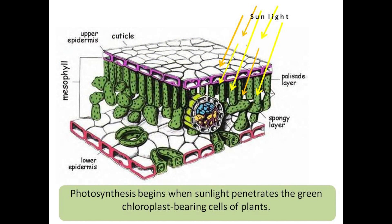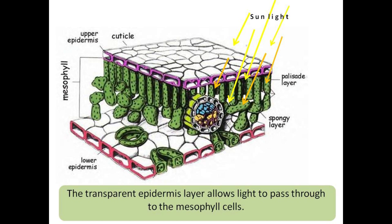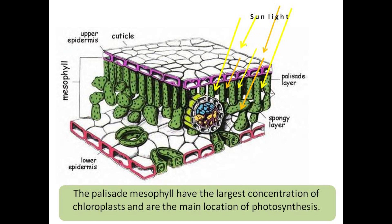Photosynthesis begins when sunlight penetrates the green chloroplast-bearing cells of plants. The transparent epidermis layer allows light to pass through to the mesophyll cells. The palisade mesophyll have the largest concentration of chloroplasts and are the main location of photosynthesis.